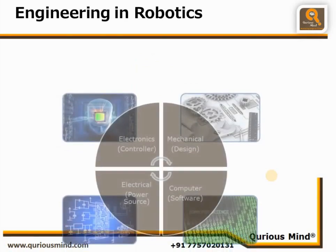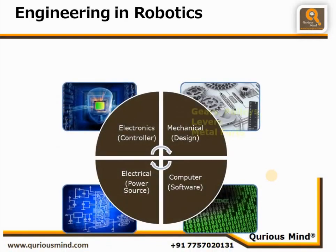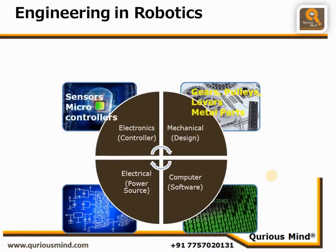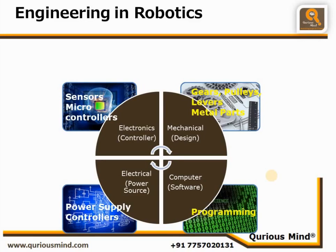Robotics is a combination of different engineering fields. The construction of a robot uses mechanical engineering. Sensors and microcontrollers, which are part of electronics engineering, are the senses and heart of the robot respectively. More than 80% of robots are powered by electricity and require knowledge of electrical engineering for designing the power source. Finally, computer engineering completes the package by programming the robot to perform the required functionalities.